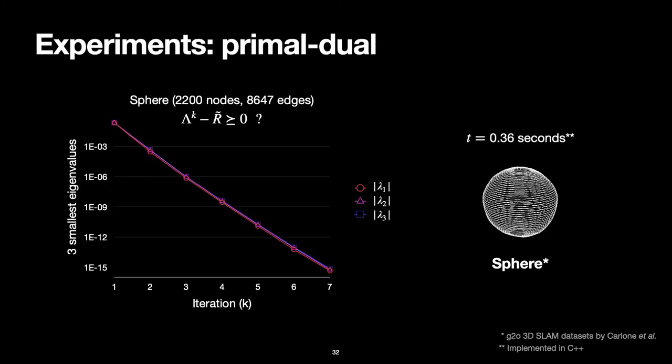Moving on to the experiments, we first assess the quality of our primal-dual iterations using pose graph optimization datasets. What we showcase here is the convergence of the three smallest eigenvalues of λ minus R̃ over the iterations. Recall that a sufficient condition for optimality was that this matrix be positive semi-definite. For the sphere dataset with over 2000 nodes, convergence is approximately linear, and we attain machine precision of the eigenvalues after 0.35 seconds.